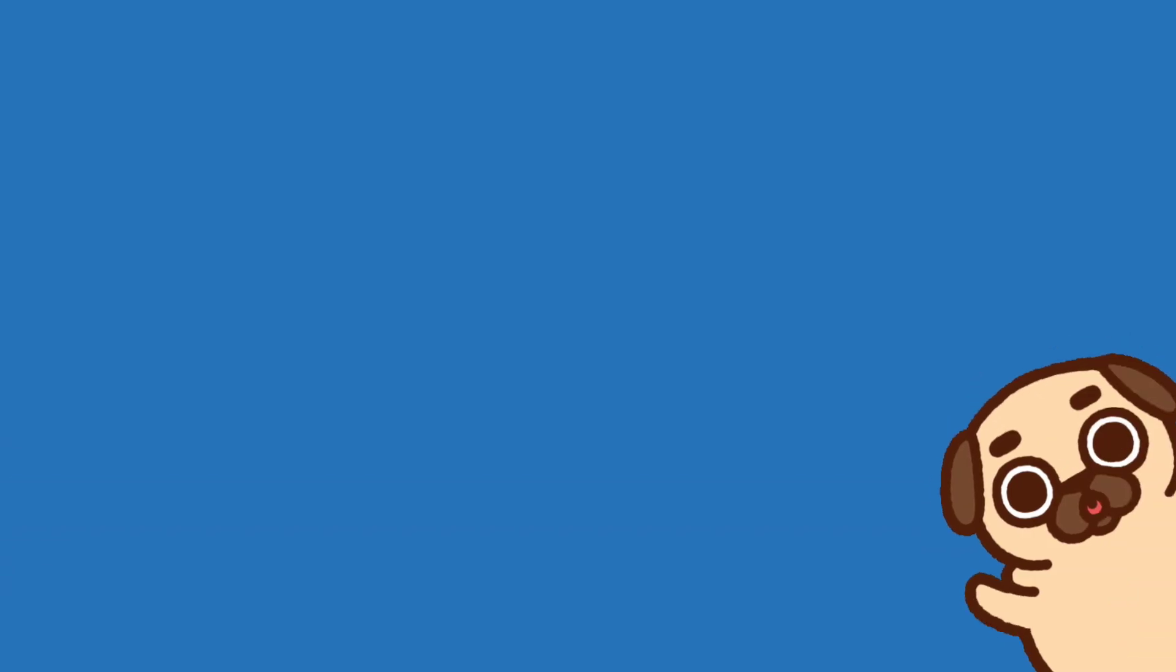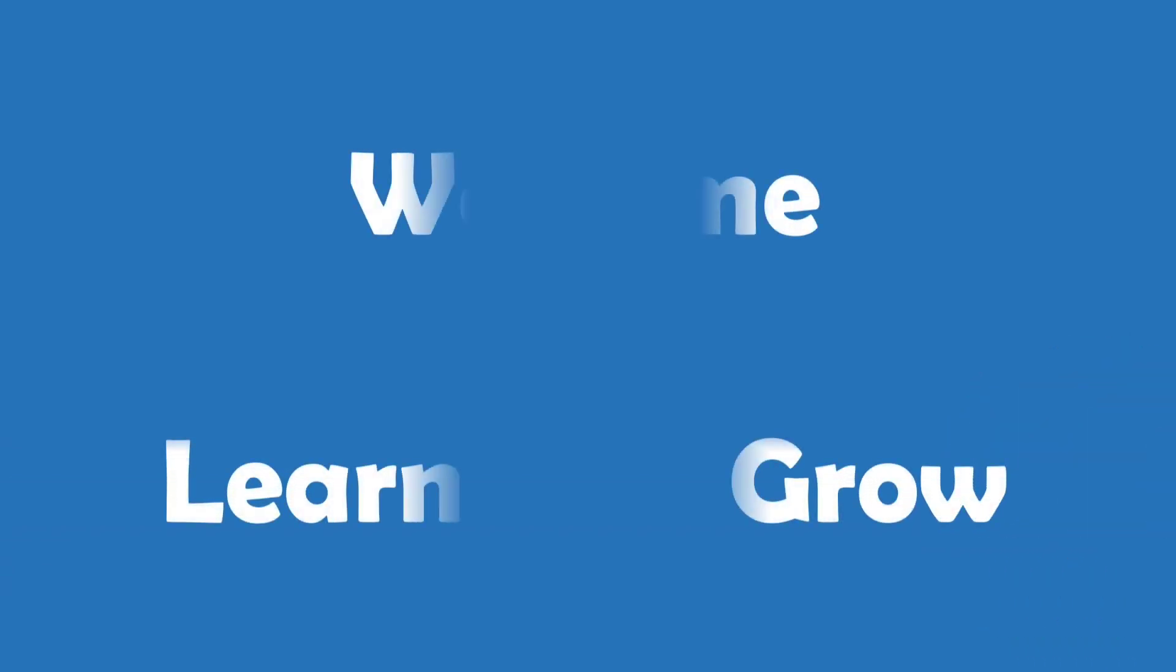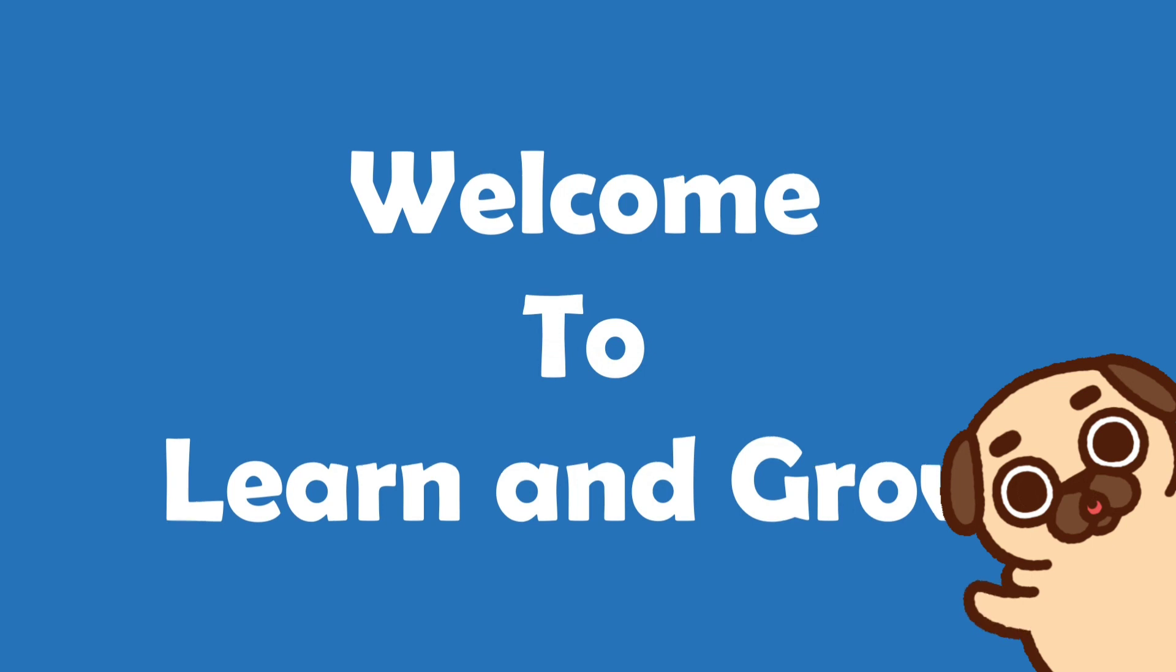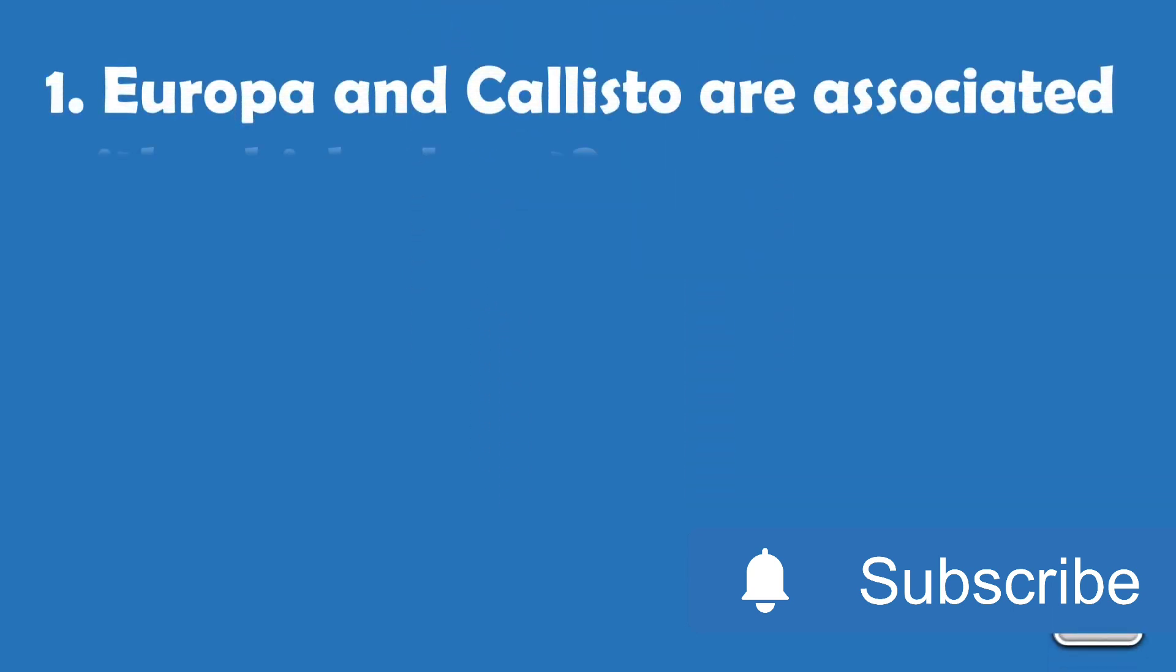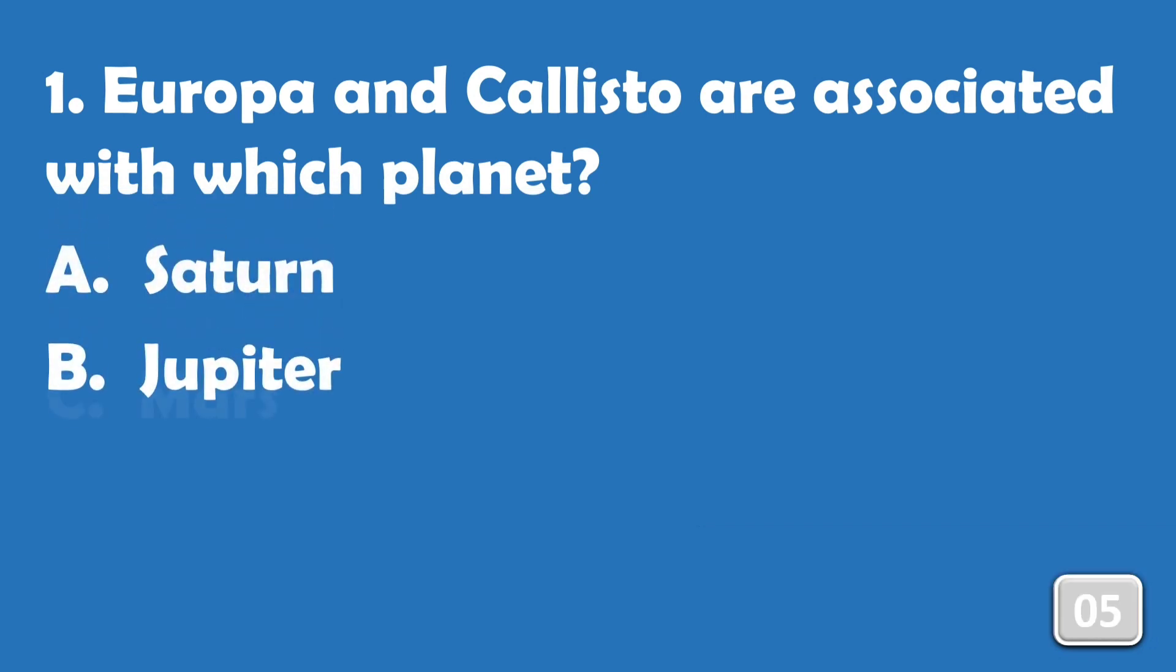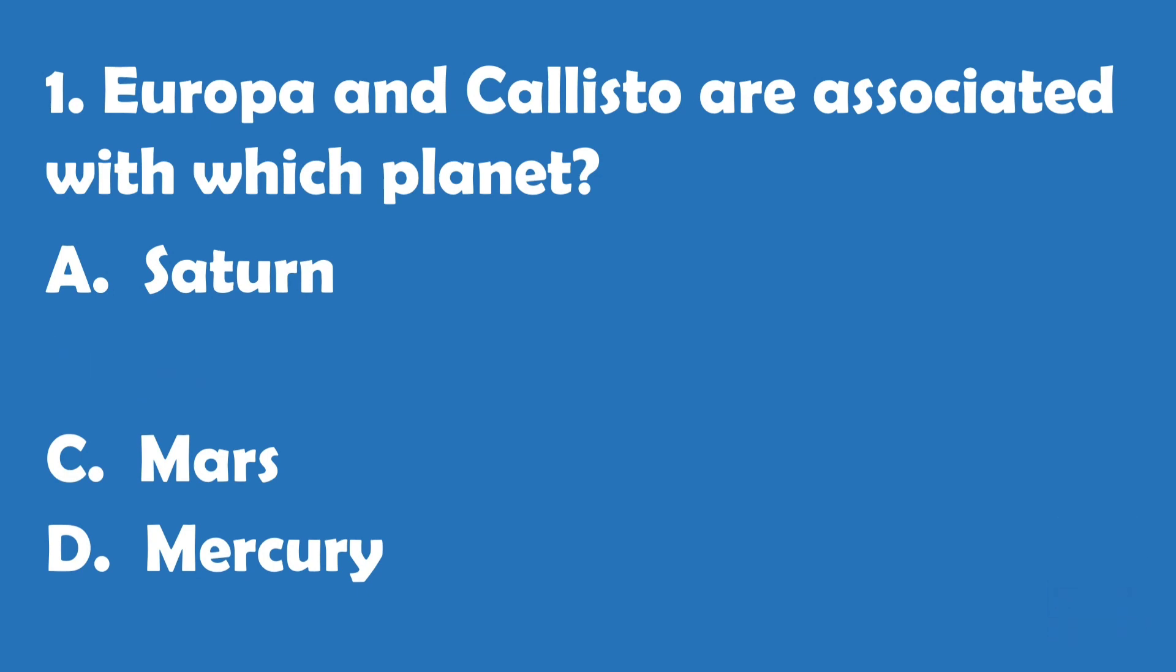Hi guys, welcome back to my channel Learn and Grow Solar System Quiz. Europa and Callisto are associated with which planet? Options are: A) Saturn, B) Jupiter, C) Mars, or D) Mercury.